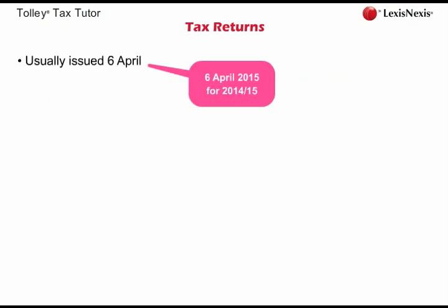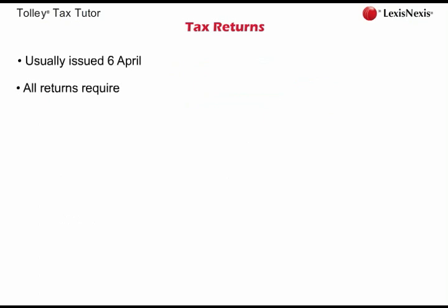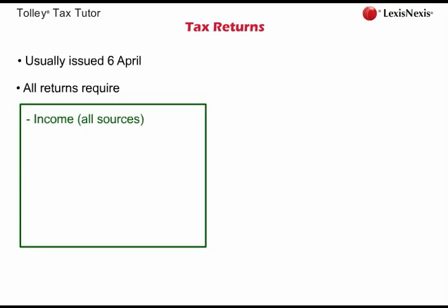So tax returns for the year ended the 5th of April 2015 — i.e. returns for the 2014-15 tax year — will usually be issued on the 6th of April 2015. Every tax return requires the taxpayer to provide details of all income received from all sources in the tax year. Certain allowances also need to be claimed within the tax return — for example, a taxpayer born before the 6th of April 1935 who is entitled to the married couple's allowance needs to claim that on the return.